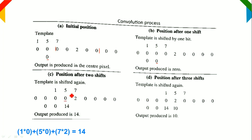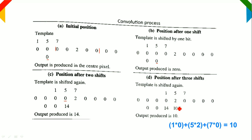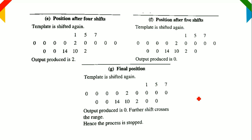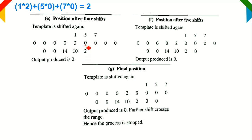Moving the template to the next position: 1×0 + 5×2 + 7×0 = 0 + 10 + 0 = 10. The resultant value is 10, assigned to that center pixel. Moving one more step: 1×2 + 5×0 + 7×0 = 2 + 0 + 0 = 2. The resultant value is 2, assigned to that center pixel.